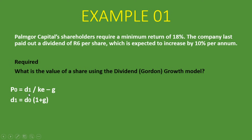The formula is P0 equals D1 — dividend at period one, calculated as D0 times one plus the growth rate — divided by KE, the minimum return or cost of equity, minus the growth rate. It's just knowing what amount to use where and what figure to use where. With a question like this, you have to pay very careful attention to the detail that you are given.